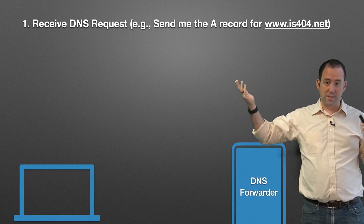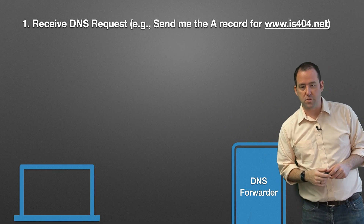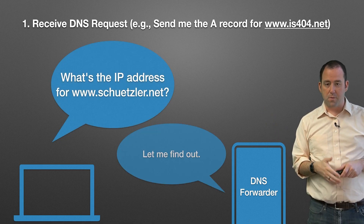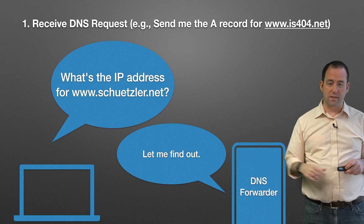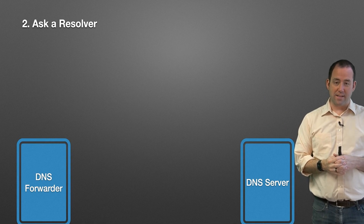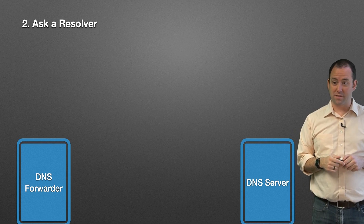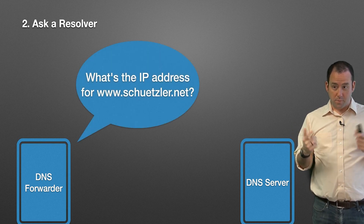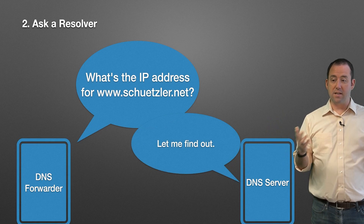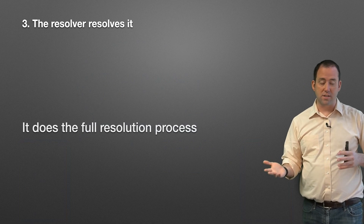What's the forwarding process? It starts out the same. Your computer doesn't know whether the DNS server it's talking to is a forwarder or doing full resolution — your computer is just going to reach out and ask what the IP address is. The DNS forwarder is not actually saying this, but it's going to go find out. So now the DNS forwarder — what does it do? The first thing it does is ask a resolver. It just asks someone else to do this process for it.